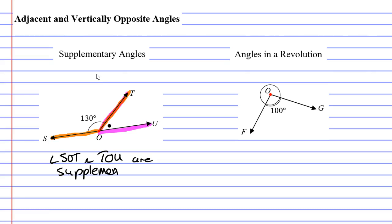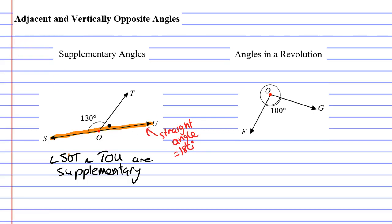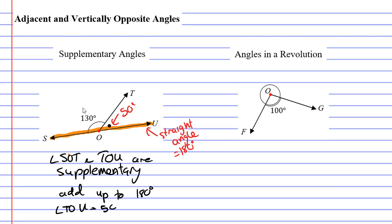So what does supplementary mean? If we look at the line SU — it's very straight. In an earlier lesson, we learned that if you have a straight angle, it will have an angle of 180 degrees. So supplementary angles add up to 180 degrees. Looking at angle TOU, that would have to be 50 degrees, because 130 plus 50 is 180. Angle TOU must equal 50 degrees.